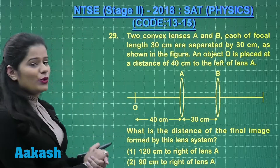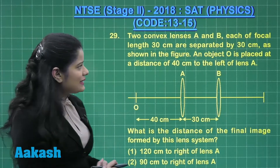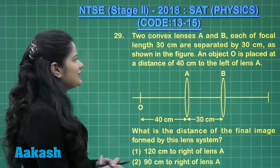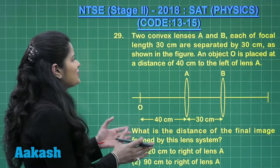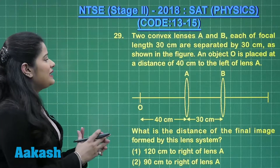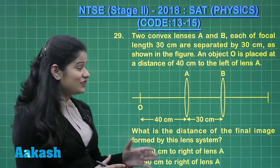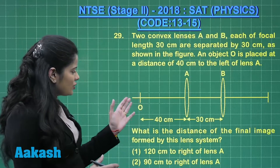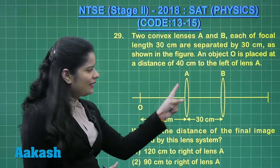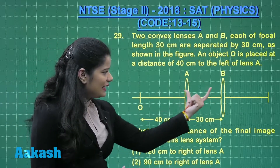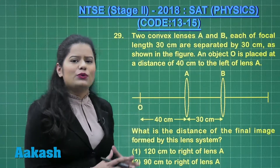Now let us take up the next question. Here we have question number 29 on the board which says two convex lenses A and B, each of focal length 30 centimeter, are separated by 30 centimeter as shown in the figure. An object O is placed at a distance of 40 centimeter to the left of lens A. This object O is placed at a distance of 40 centimeter from lens A, and lens A and lens B are separated by a distance of 30 centimeter.